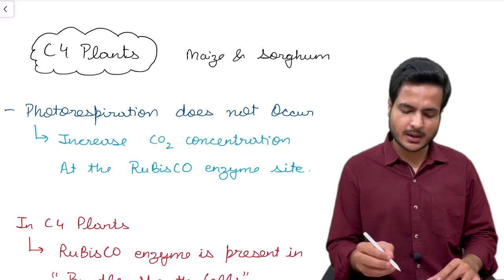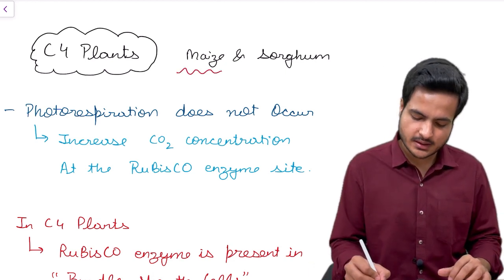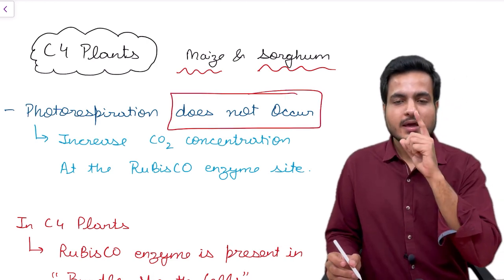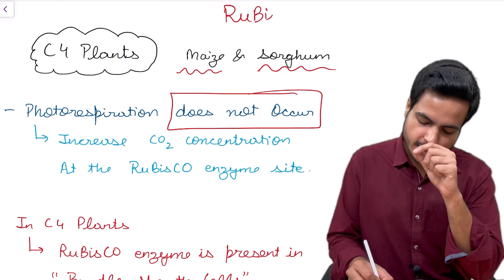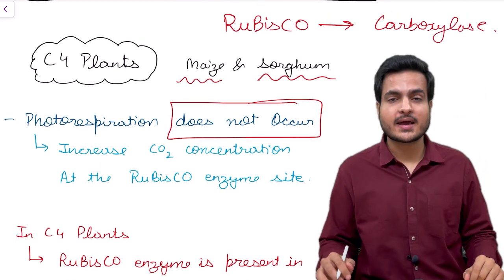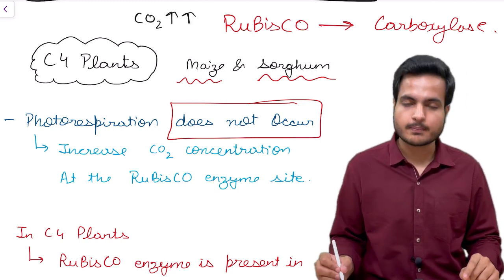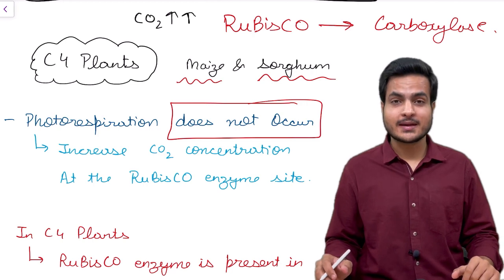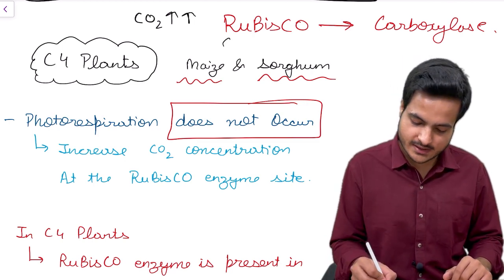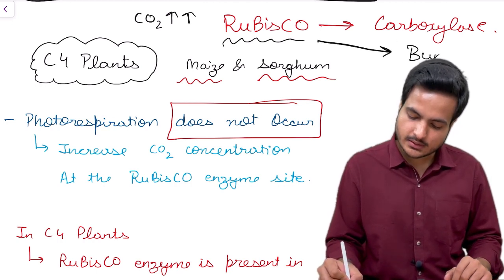Why do C4 plants not undergo photorespiration? Examples of C4 plants are maize and sorghum. In C4 plants, photorespiration does not occur because the enzyme RuBisCO is forced to behave like a carboxylase. This happens only when the amount of carbon dioxide in its surroundings is increased. C4 plants achieve this by increasing CO2 concentration around the enzyme.